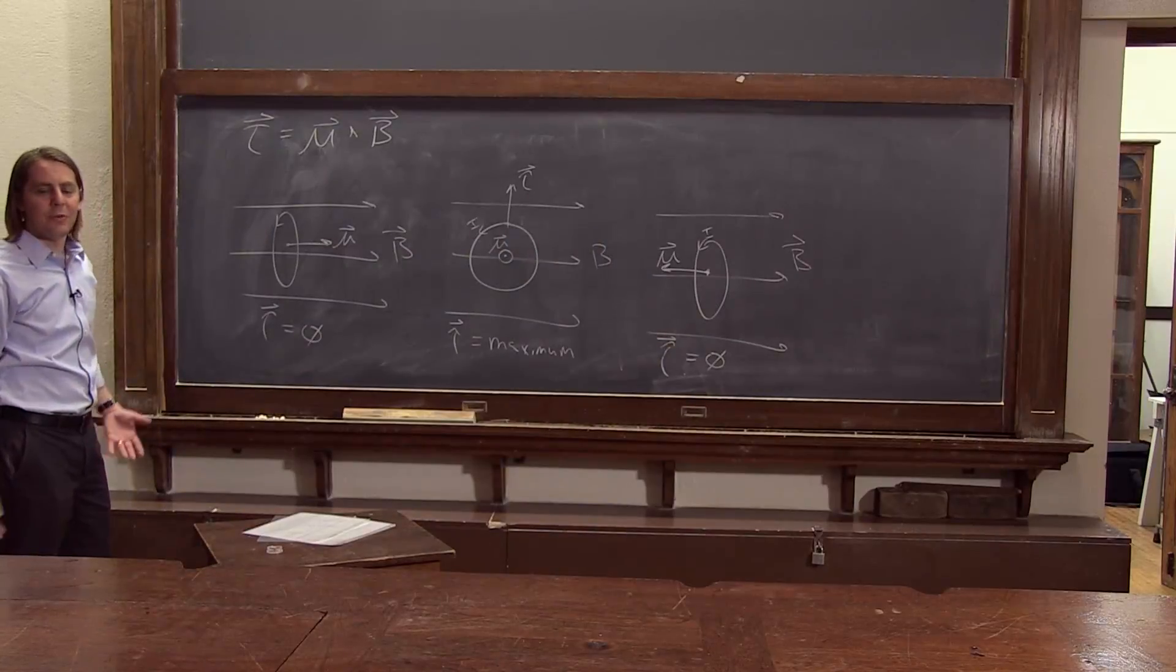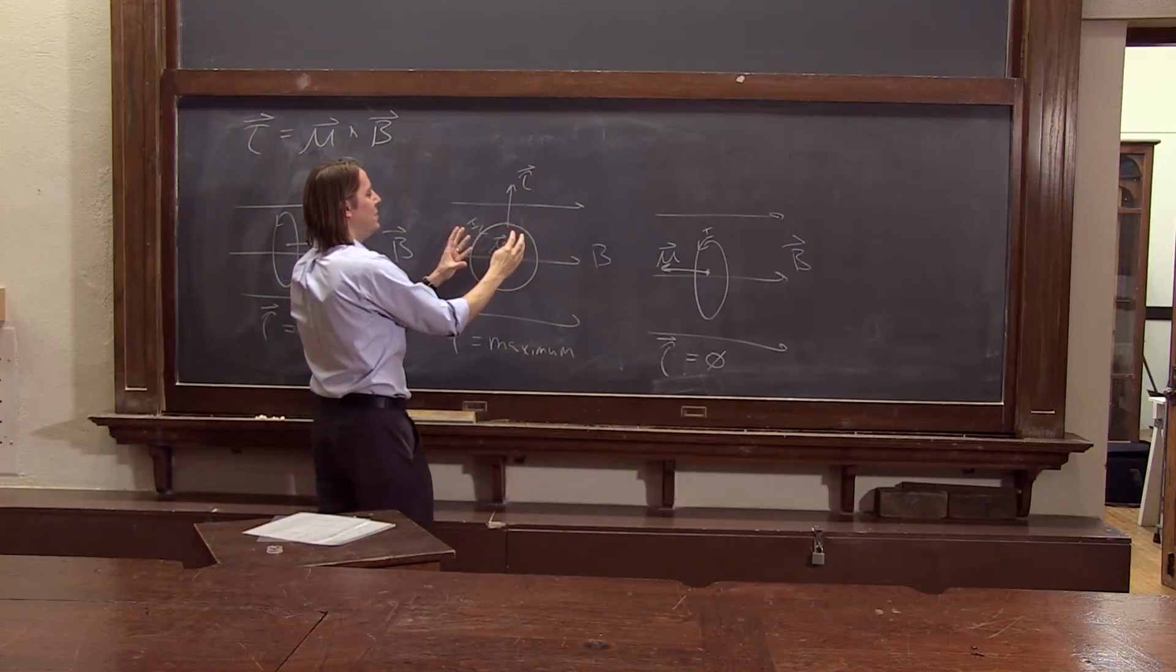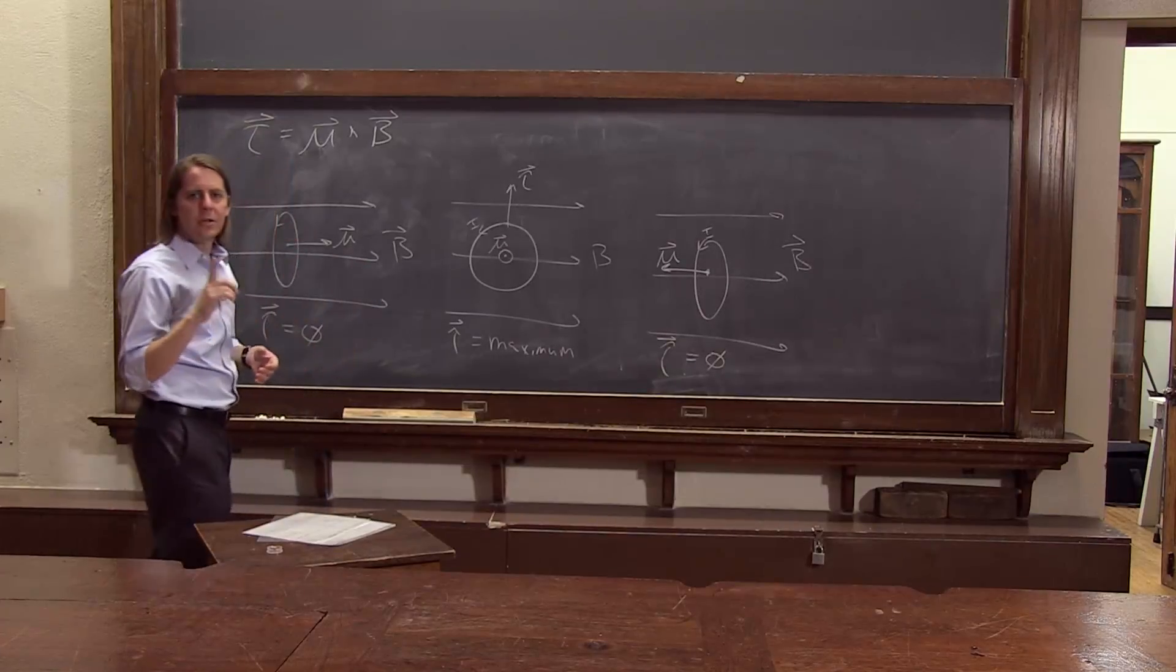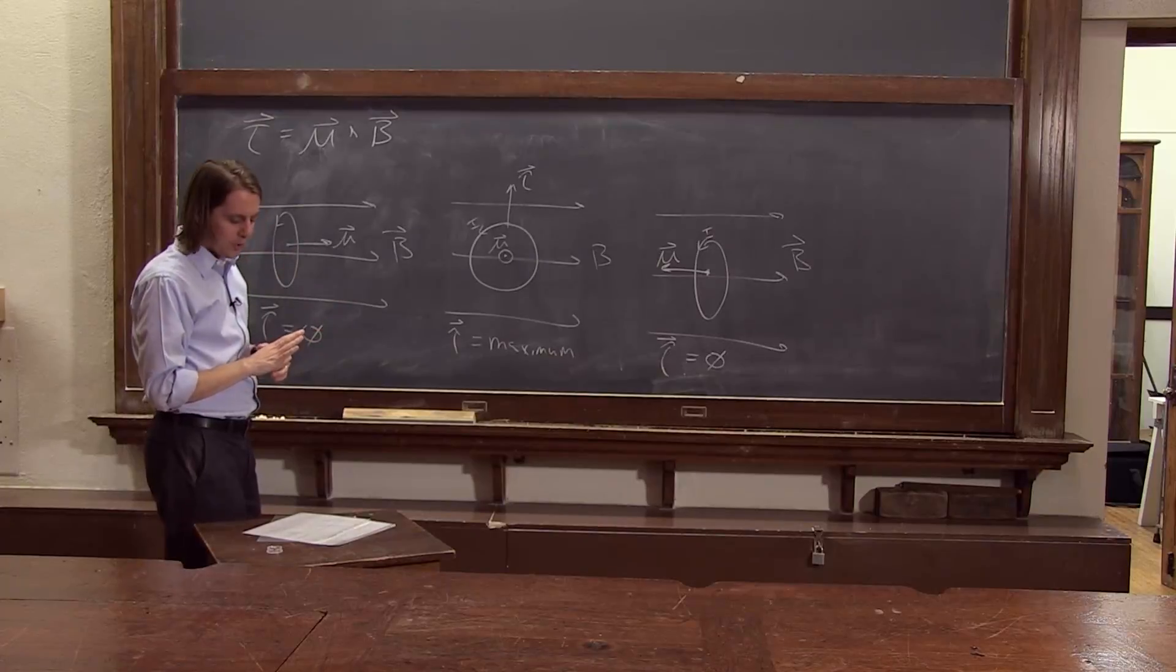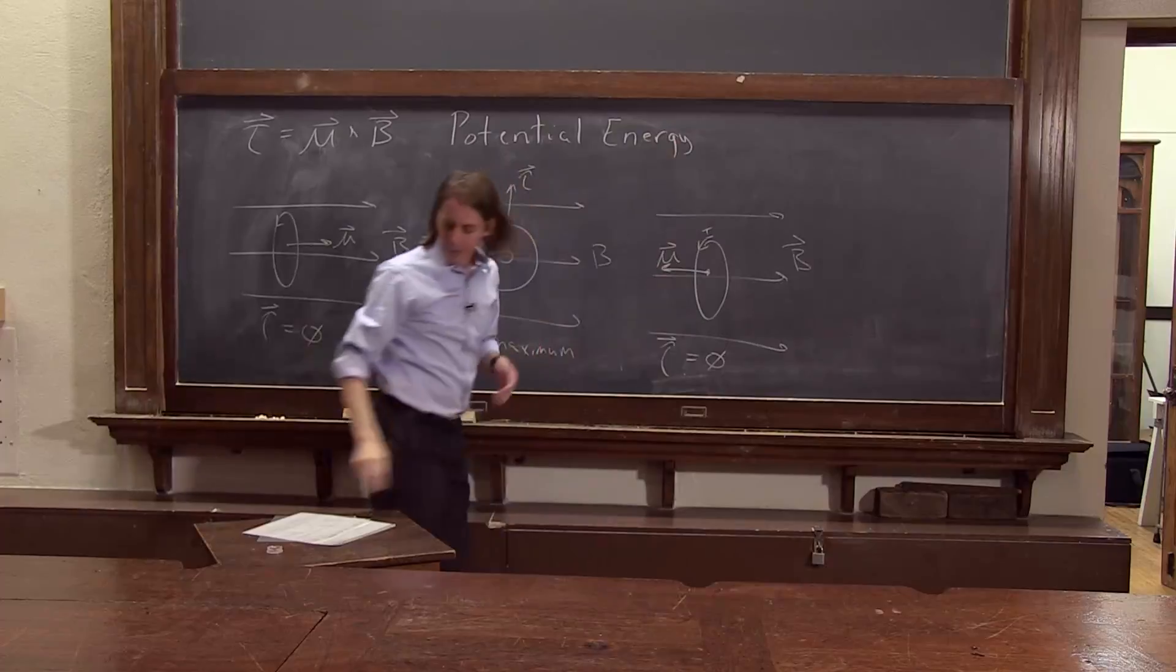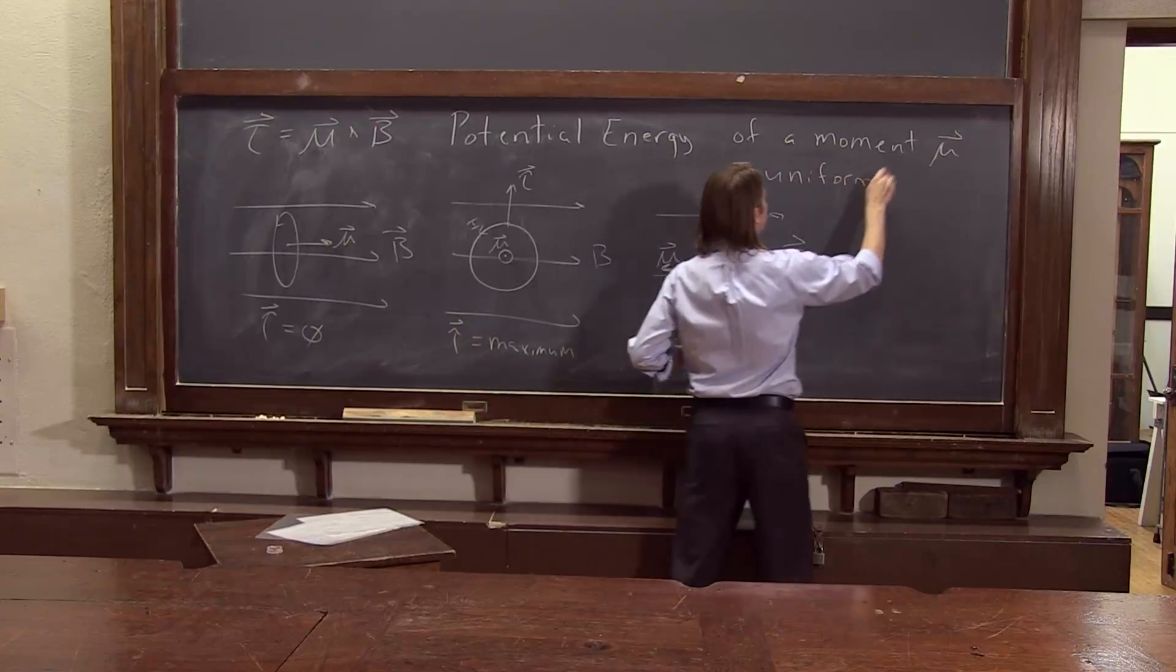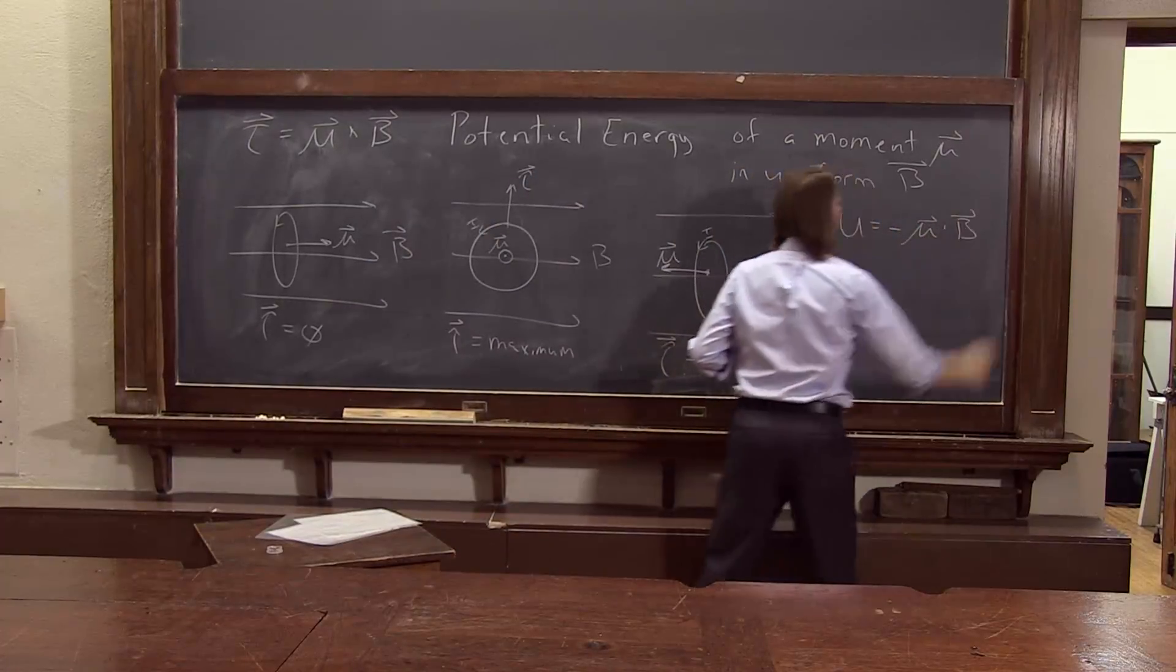So what we really have here is a potential energy. We have a case where you can be here with no kinetic energy. You can turn it and push against the torque to align it this way. You've given it potential energy, and you can release it and it'll turn back and have kinetic energy. You can go back and forth, just like a charge in an electrostatic field. Now we said the magnetic field doesn't do work, but that was on free charged particles. This is a charge confined to stay in a current loop. That's why we can start to do some work against the field. So the potential energy of a moment in a uniform B is U = -μ·B.